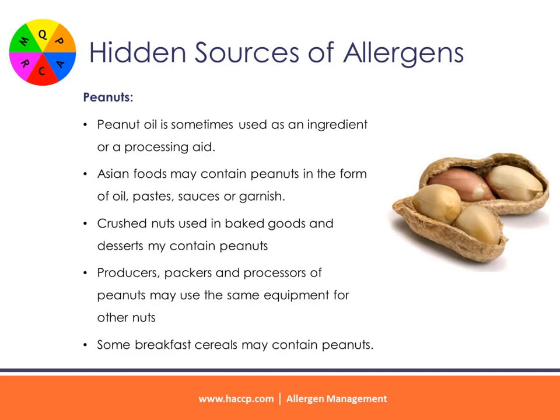Common hidden sources of allergens — peanuts: peanut oil is sometimes used as an ingredient or a processing aid. Asian foods may contain peanuts in the form of oil, pastes, sauces, or garnish. Crushed nuts commonly used within baked goods and desserts may contain peanuts. Producers, processors, and packers of other nuts may use the same equipment for peanuts. Some breakfast cereals may contain peanuts.